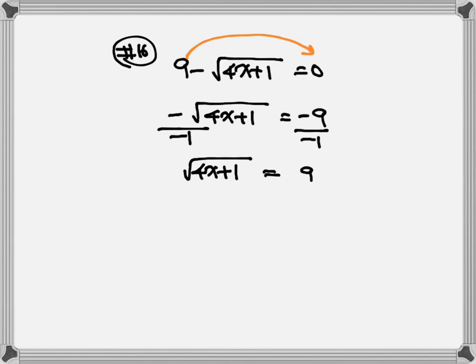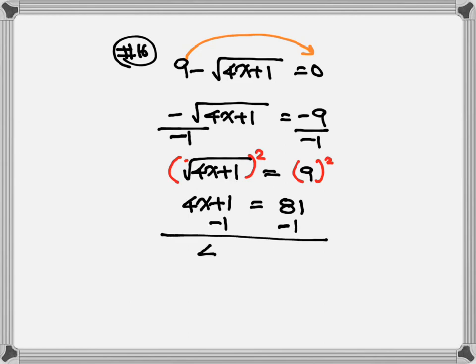So, square root of 4x plus 1 is equal to positive 9 — equal to a positive number now. Then, square both sides of the equation. The square root and the square cancel out, so just write down the number inside: 4x plus 1 is equal to 81. 9 squared gives you 81. Let's solve for x: minus 1 on both sides, so 4x is equal to 80. Divide everything by 4, so x is equal to 20.